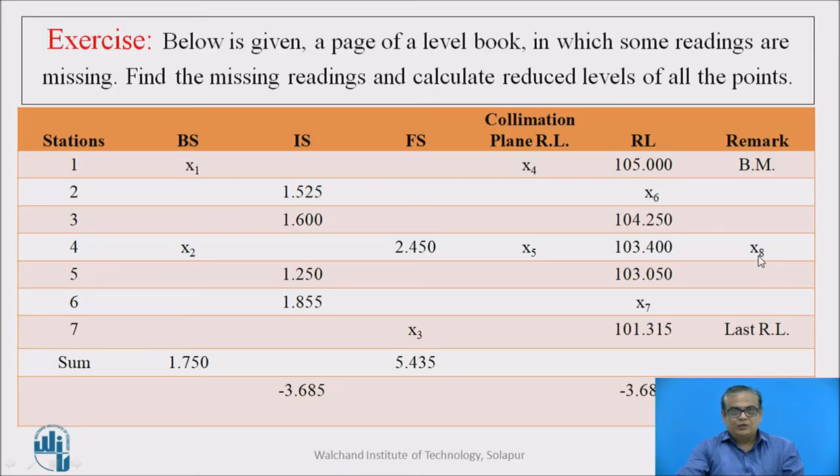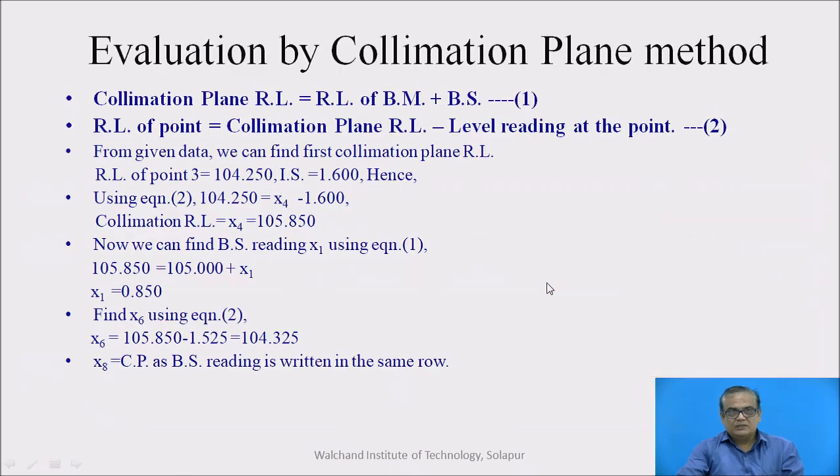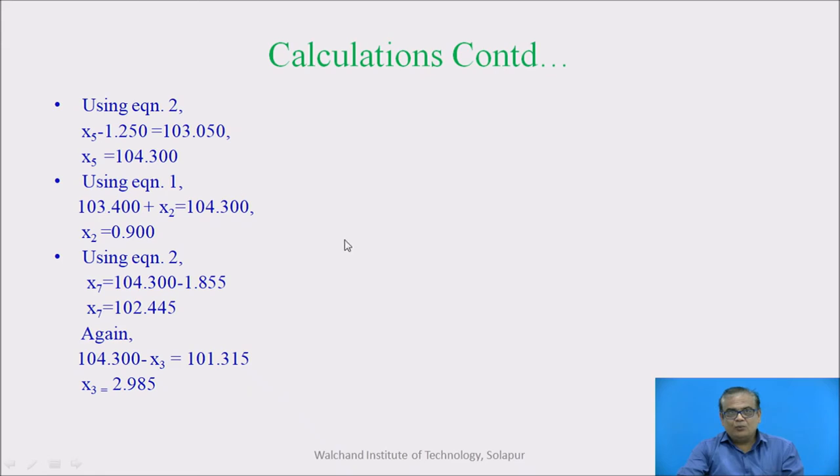So now, once we know that this is change point, how to find collimation plane RL, new collimation plane RL because instrument position is changed now. For that, we need to know the backside reading here. Or here you are having intermediate side reading at station number 5 and here RL of that station is known. From these two readings, we can easily find out collimation plane RL by using equation 2. So x5 minus 1.250 is equal to 103.050. This will give us value of x5. So how much is x5? x5 is 104.300.